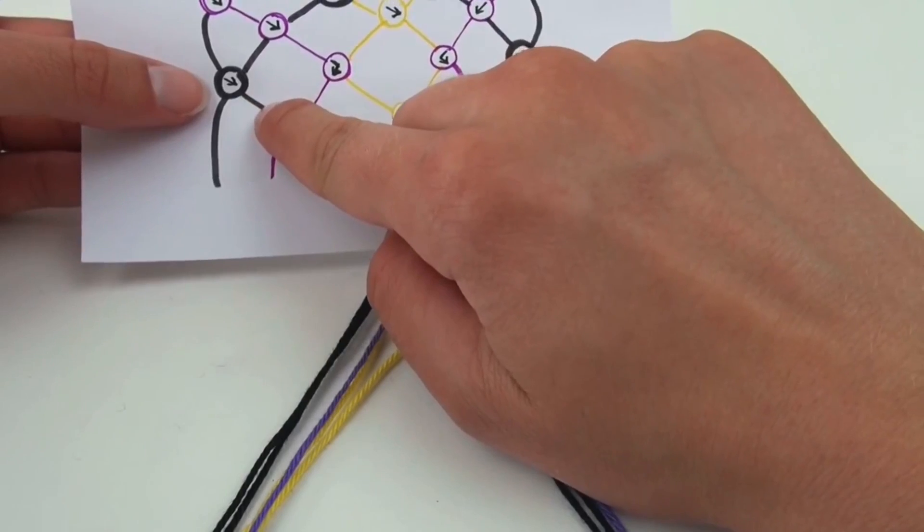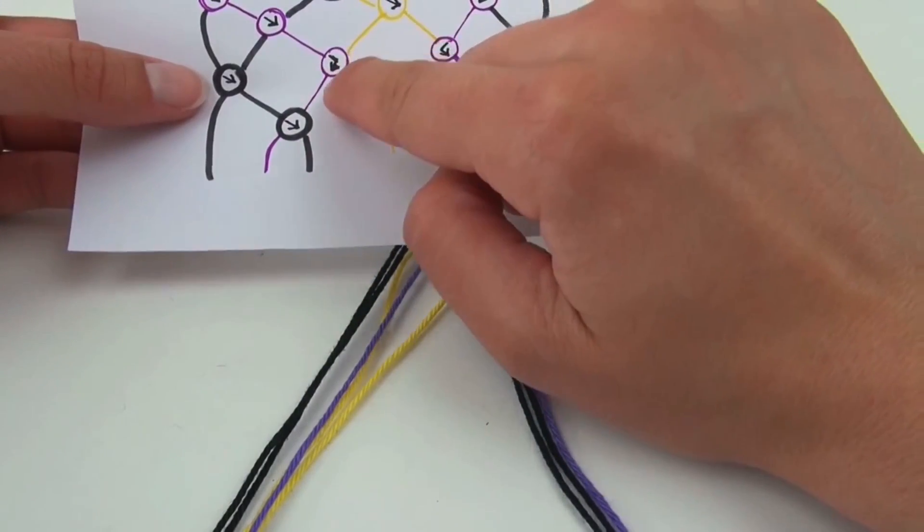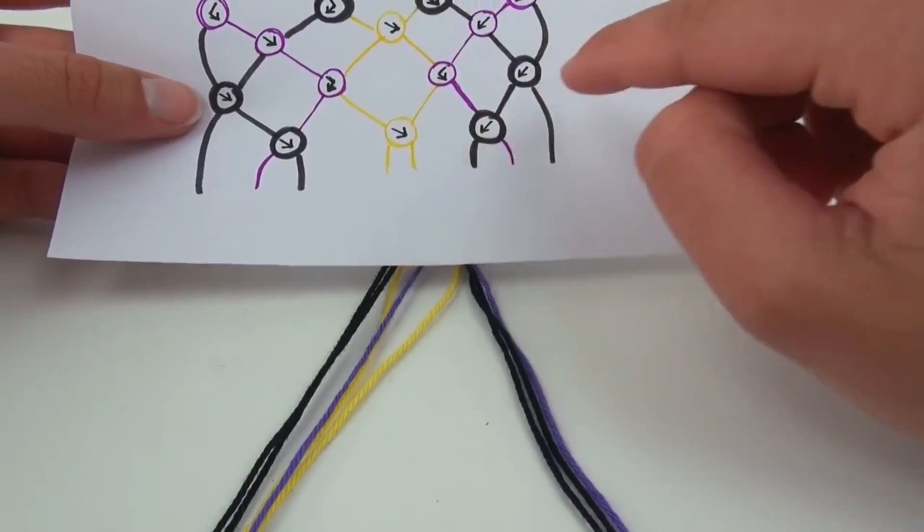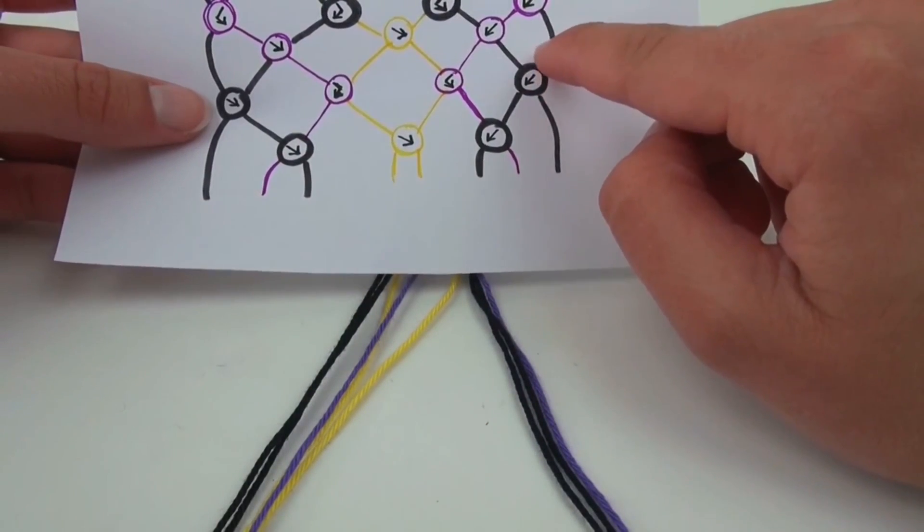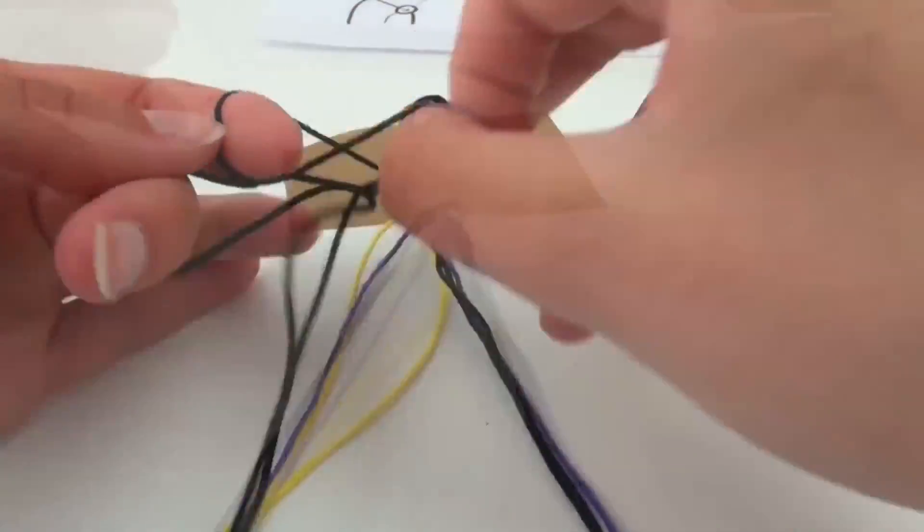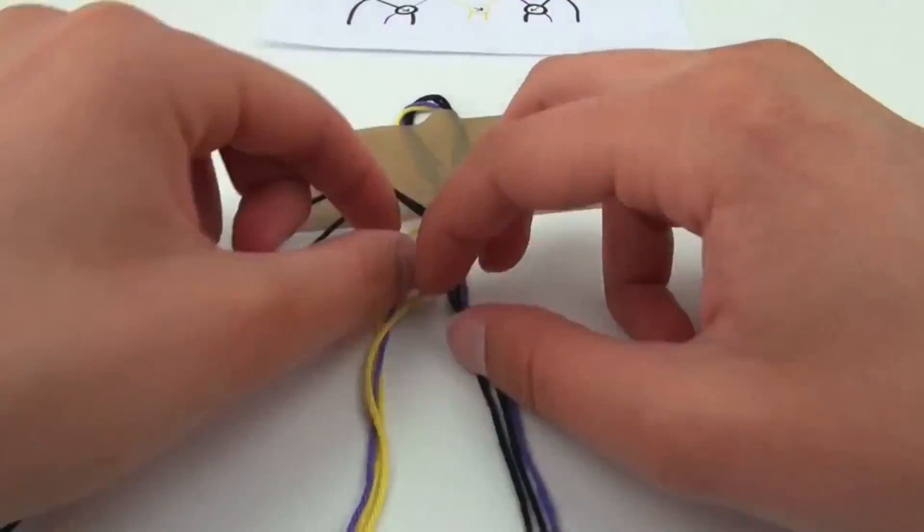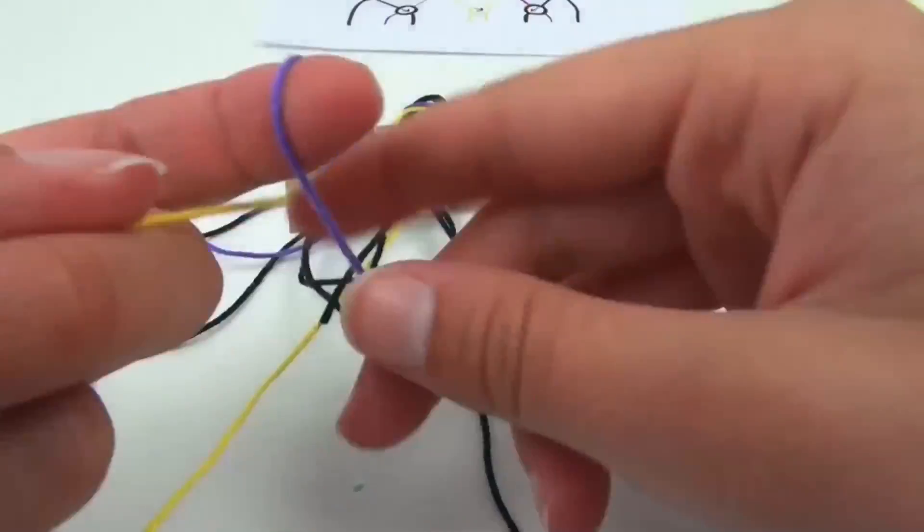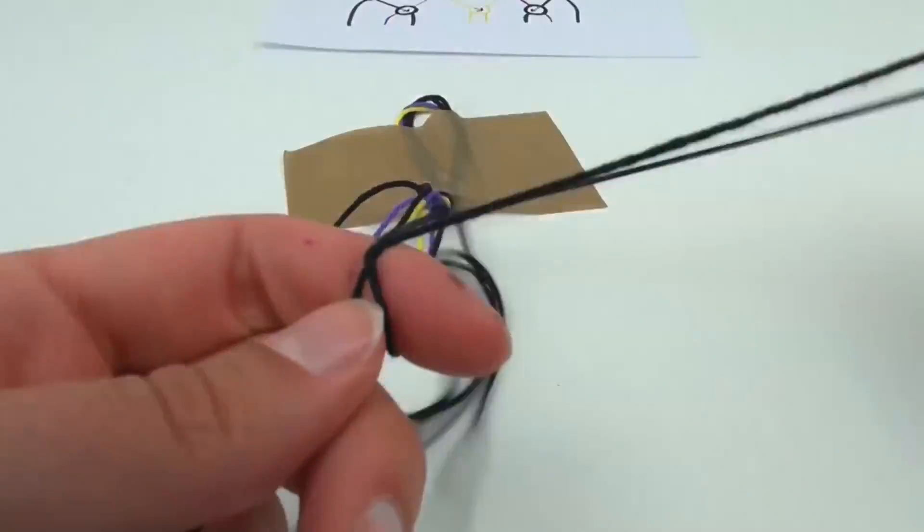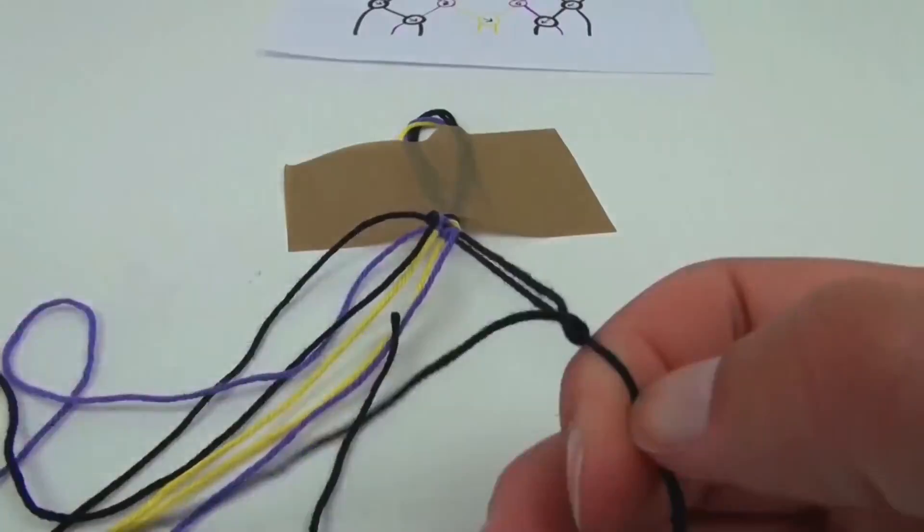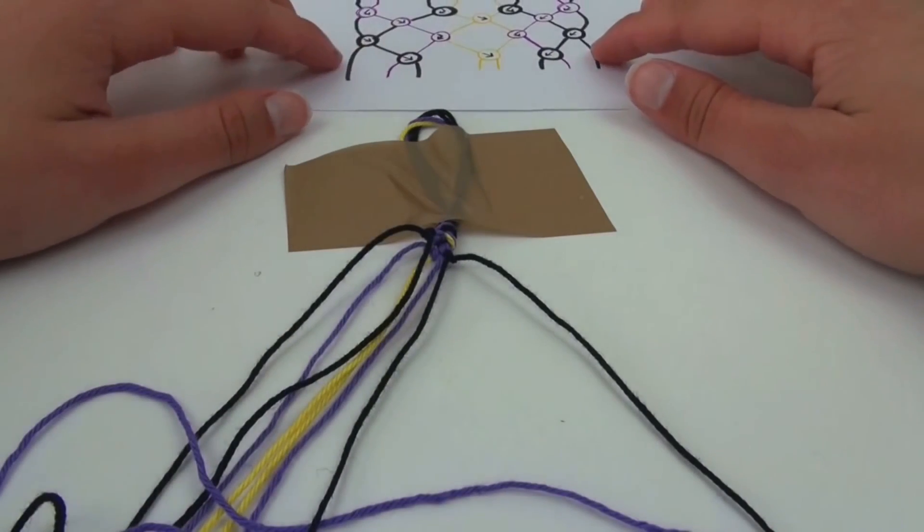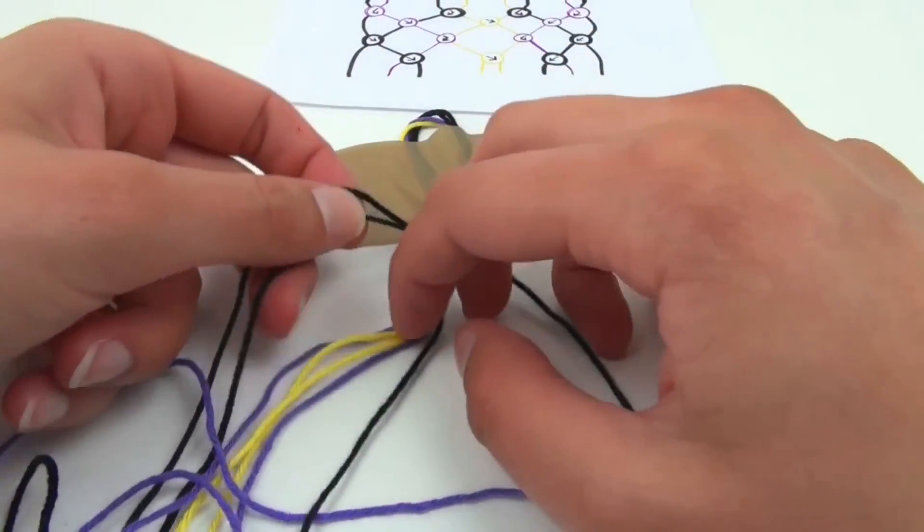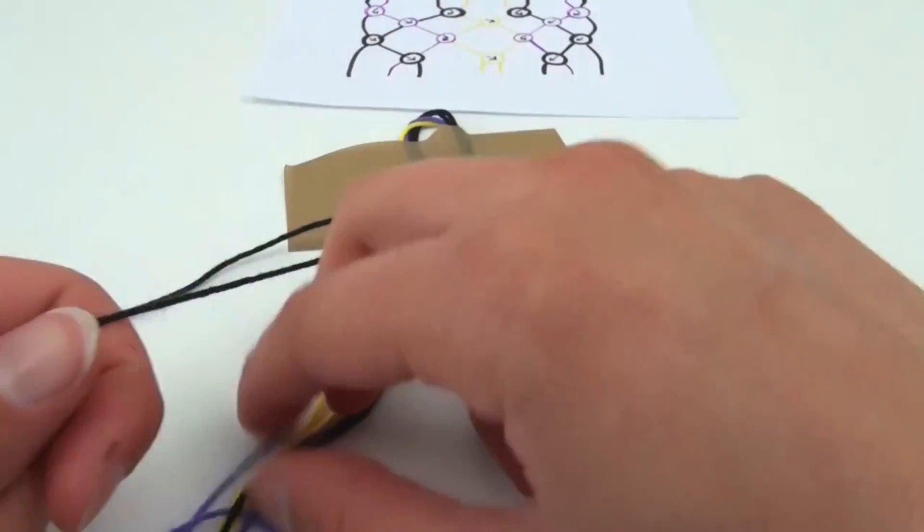Then our third row. We've got the black one over the black one towards the right, then the purple one over the black one, and then the purple one over the black one, and then the black one over the black one.